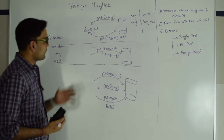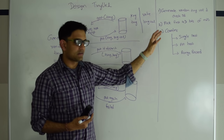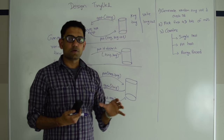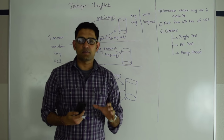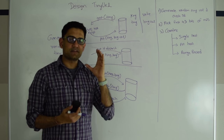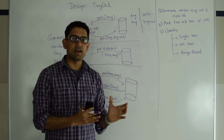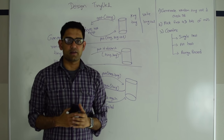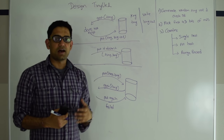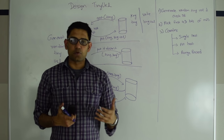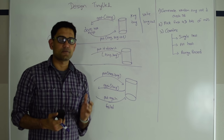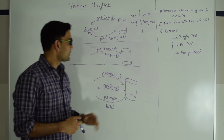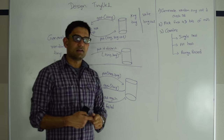Before we go into the techniques, let's talk about the database. What would the table schema look like? The table schema would have the key as the tiny URL and the value as the longer URL. Unless you need to add more features, this is more than enough for the table schema.